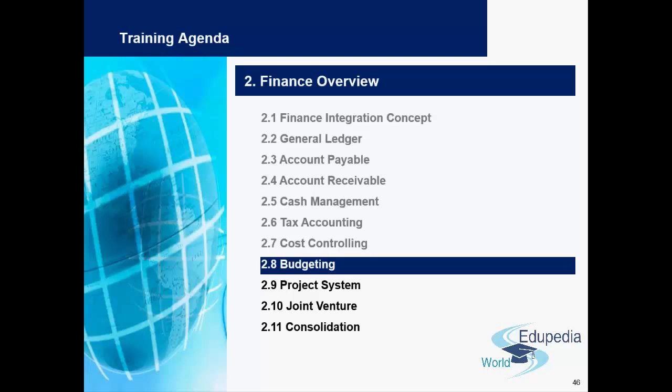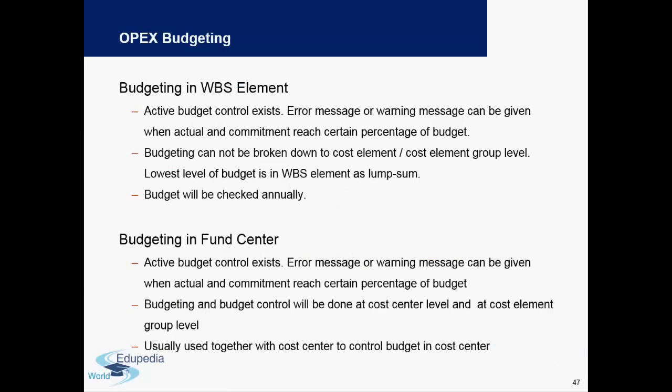Hello everyone, thank you for watching Edupedia World videos. Until now we have covered under SAP Finance the topics which are already grayed out on the top. We will now continue with budgeting. Budgeting is done under two different formats: one is budgeting in WBS element and the other is budgeting in fund center. WBS elements are nothing but Work Breakdown Structures. Active budgeting control exists — error messages or warning messages can be given when actual and commitment reach a certain percentage of budget.